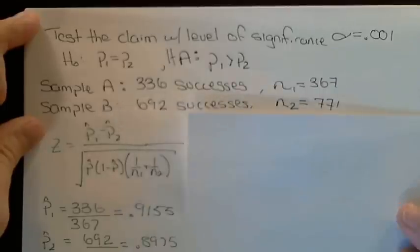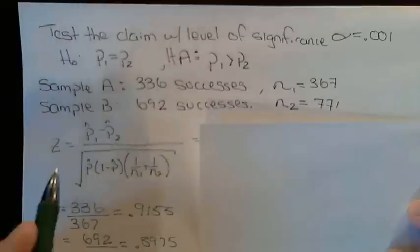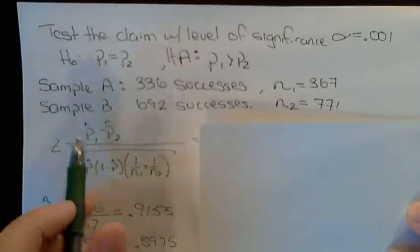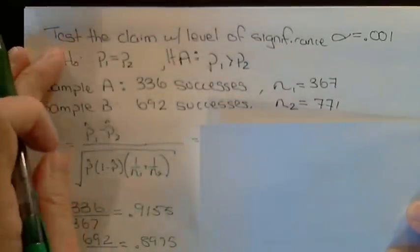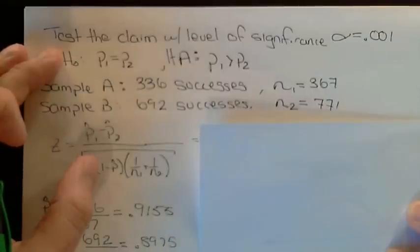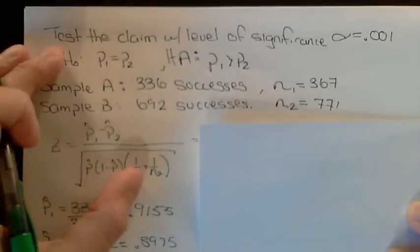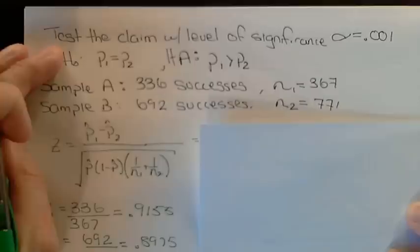We first are going to find the test statistic, which is z equals the difference of the two sample proportions divided by the square root of the pooled sample proportion times 1 minus the pooled sample proportion, times 1 divided by the first sample size plus 1 divided by the second sample size.